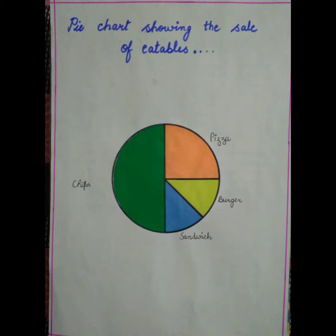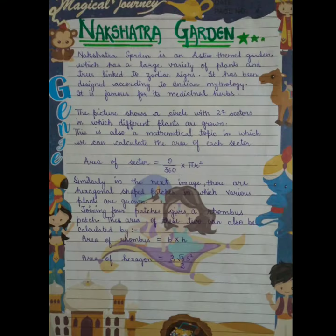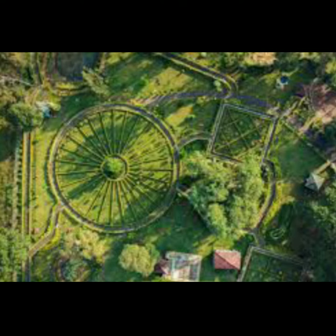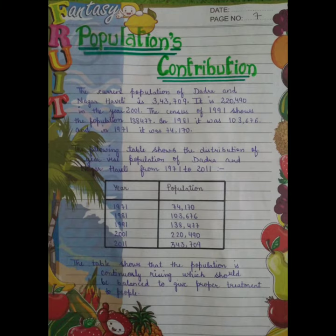In this project I have shown how the Swami Narayan Temple's upper portion, the Garb Griha, forms a frustum. Then we made a pie chart for all the eatable sales from the Dudney Lake.